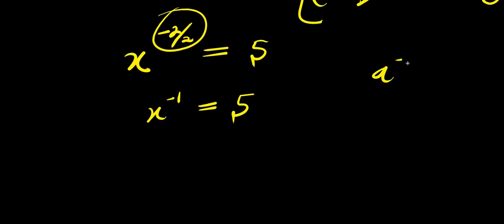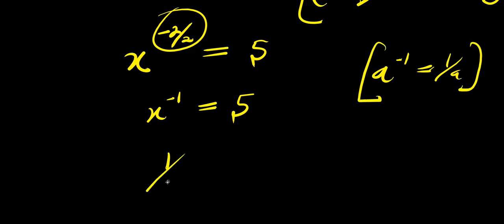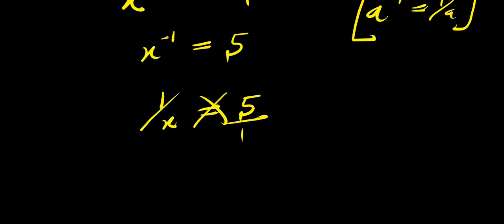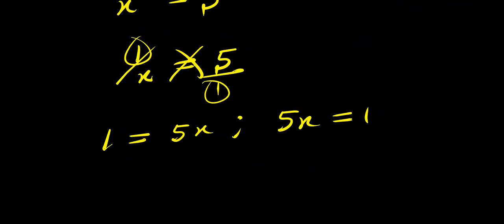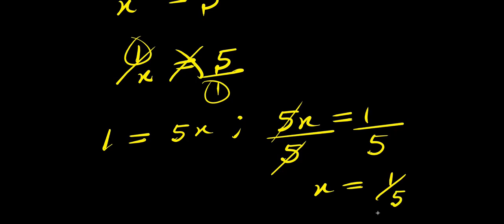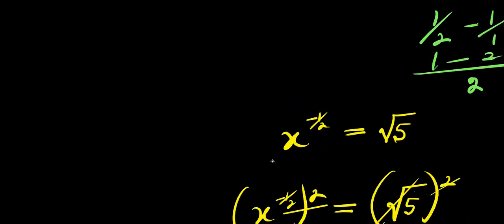Remember, a power negative 1 equals 1 over a. So x power negative 1 is the same as 1 over x, and this equals 5. Cross multiplying: x times 5 gives 5x, and 1 times 1 gives 1, so 5x equals 1. Dividing both sides by 5, x equals 1 over 5. So in this second method, x equals 1 over 5.